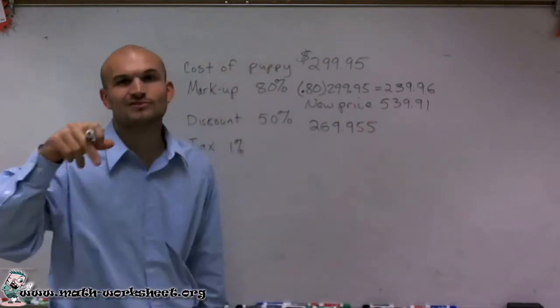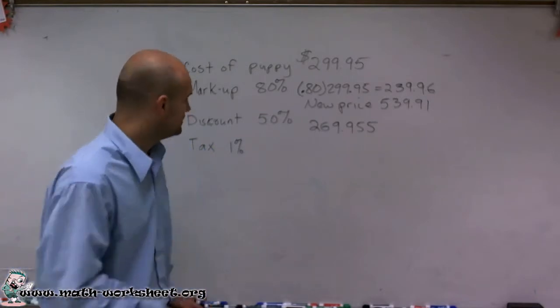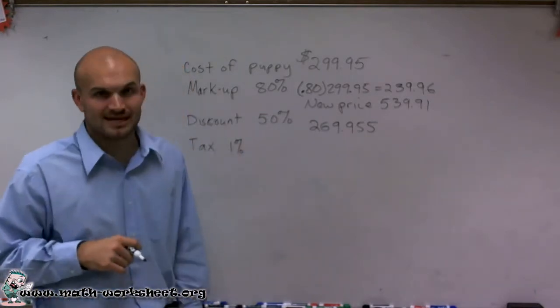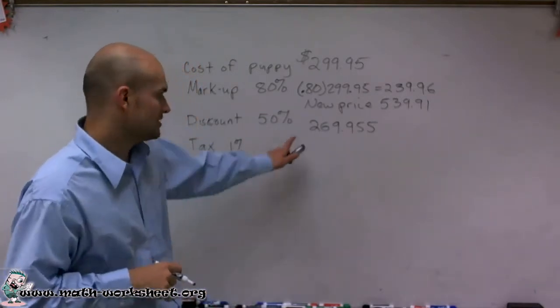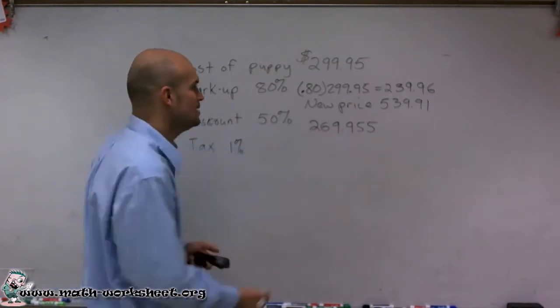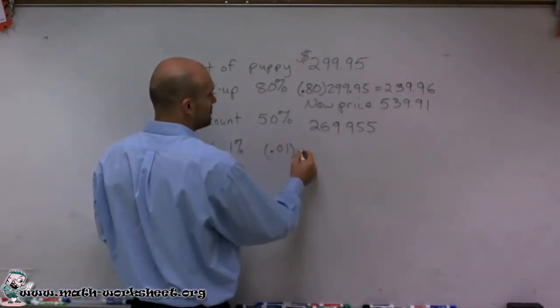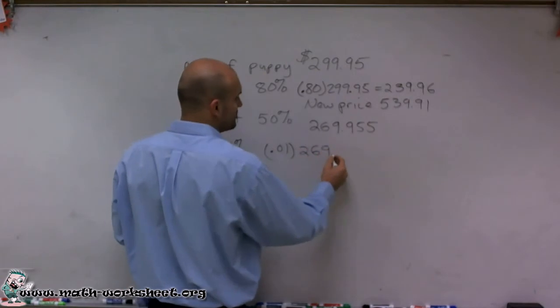So let's say you're like, all right, I like it, I want it. There's a tax of 1% for the puppy. So therefore to find the amount of tax, what I'm going to do is take 0.01 and multiply by our purchase price for the puppy.